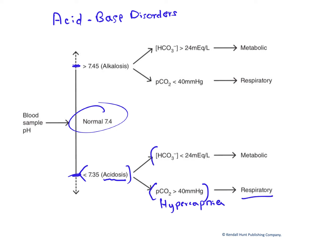The other kind of acidosis is caused by something other than hypercapnia. It's called metabolic acidosis, and it's characterized by an arterial blood bicarbonate concentration less than about 24 milliequivalents per liter. The various causes can include excess metabolic acid production, a pathology in which bicarbonate levels are too low, or renal dysfunction. So we have two different types of acidosis: respiratory and metabolic.